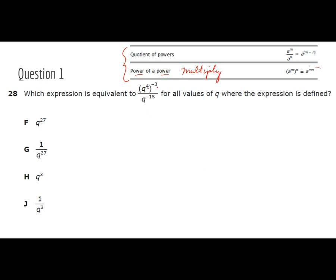We see q to the 4th to the negative 3rd, so we're going to multiply those together. q to the 4 times negative 3. And don't forget, we still have our q to the negative 15th on the denominator.